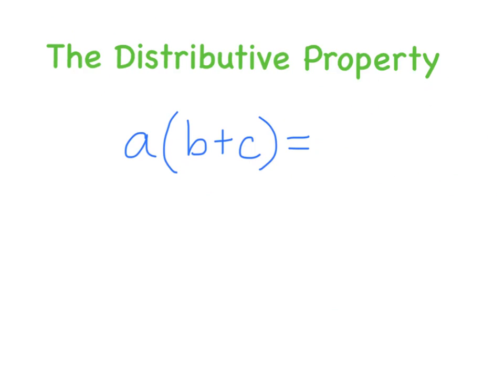Now we're going to write down the mathematical rule for the distributive property. When you have a number or letter followed by parentheses with stuff inside, you always distribute. So a times (b plus c) can be rewritten as a times b, written as ab, plus a times c, written as ac. That's the correct way to write the distributive property mathematically.